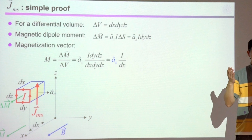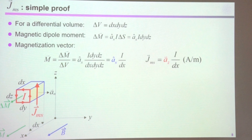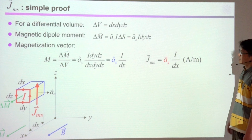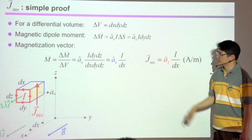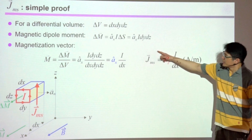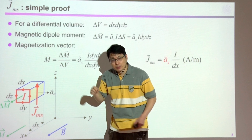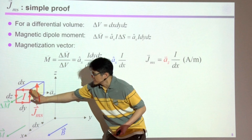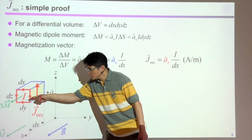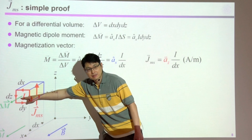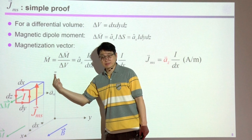As mentioned, the magnetization vector has a unit of ampere per meter, which is like a line current density. From the analysis up to now, we can conclude we do have a surface current density. Looking at the figure, Jms is more like a line current density, so the entire surface marked by the yellow is flowing with an effective current density due to the existence of this magnetization vector. This direction is obviously not in the x direction but in the z direction.